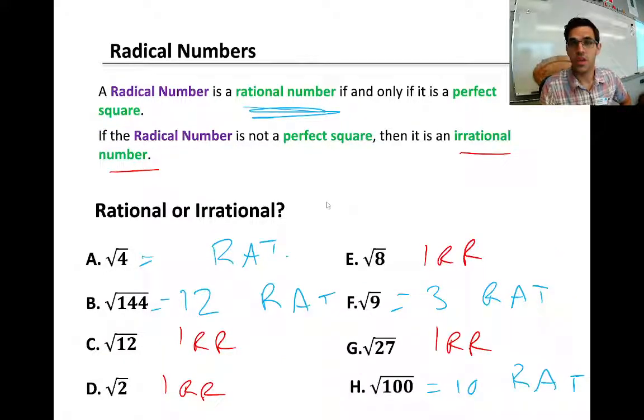So radical numbers. If a radical number is a perfect square, it's going to be a rational number. If a radical number is not a perfect square, then it's irrational. So examples of perfect squares: 1, 4, 9, 16, 25, and so on. They are perfect squares because the number times itself equals them. 1 times 1 is 1, 2 times 2 is 4, 3 times 3 is 9, and so on.